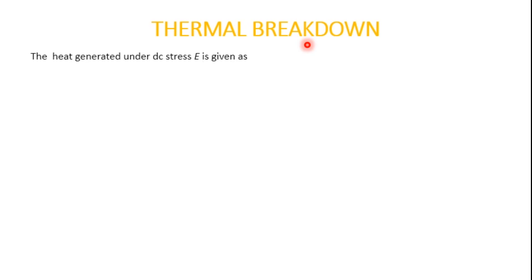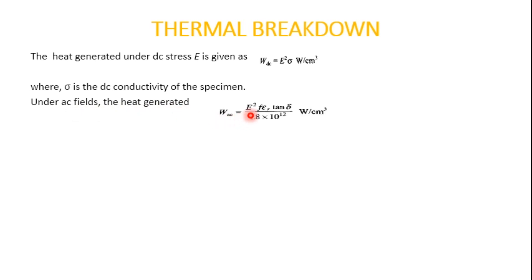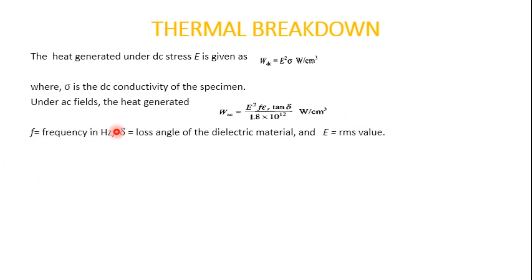The heat generated under DC stress is given by: W_DC = E² · σ (watts per cm³), where σ is the DC conductivity of the specimen. For AC supply, the heat generated is: W_AC = E² · f · ε · tan δ / (1.8 × 10¹²) (watts per cm³), where f is frequency in Hertz, δ is the loss angle of the specimen, and E is the RMS value of the electric field.